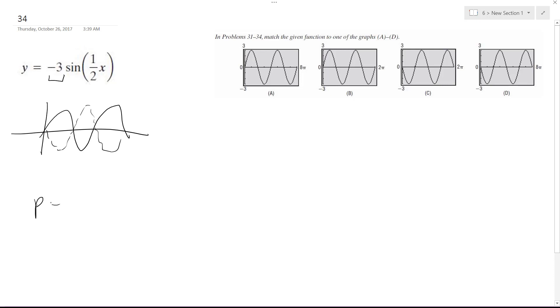And then our period is going to be equal to 2 pi divided by omega, which is going to be 2 pi divided by 1 half, which is the same thing as 2 pi times 2, because you reciprocate the fraction.